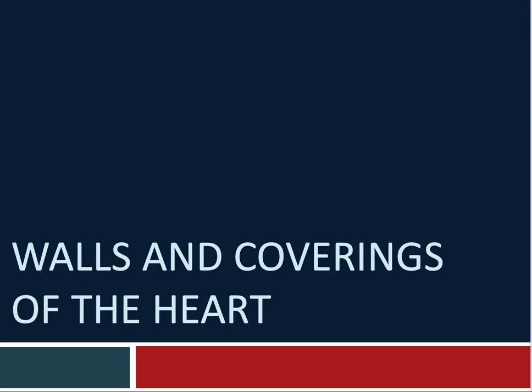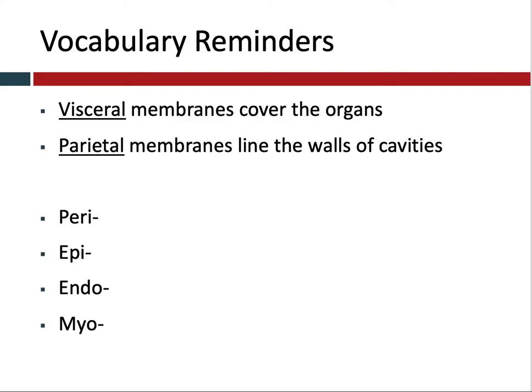Before we move on, we need to think about a couple of vocabulary words. When you talk about a serous membrane there are two layers. The visceral layer of the membrane is going to be nice and close to the organ and cover that organ, while the parietal layer of the membrane is going to be further away from the organ or line the walls of the cavity itself.